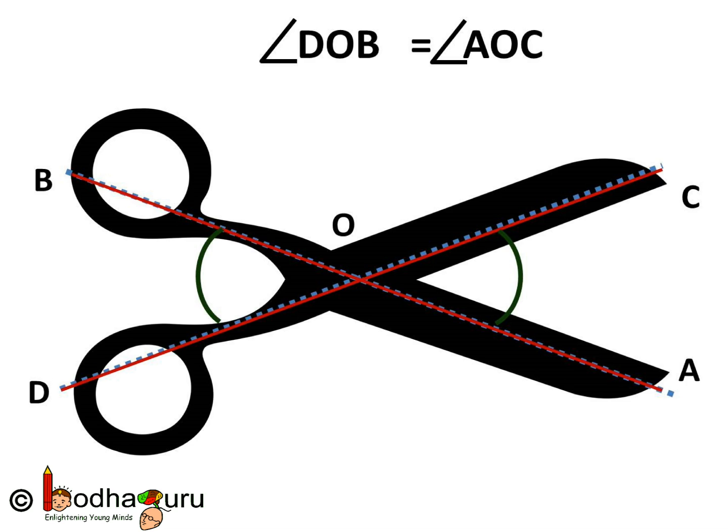Let's try to prove this using the example of a pair of scissors. So here we have a pair of scissors and AB and CD are the two intersecting lines which intersect at the point O.